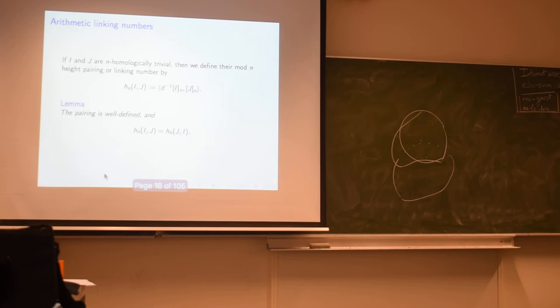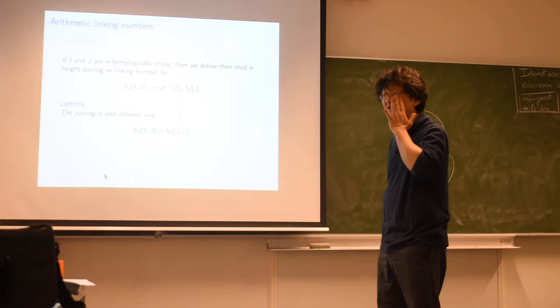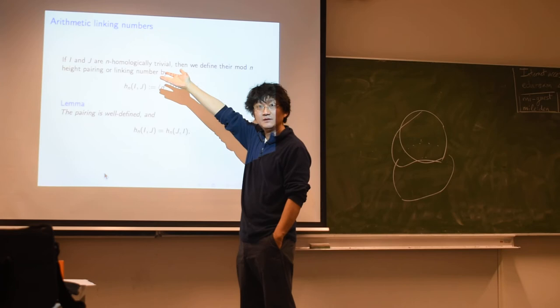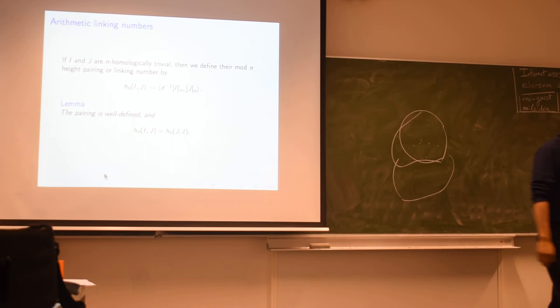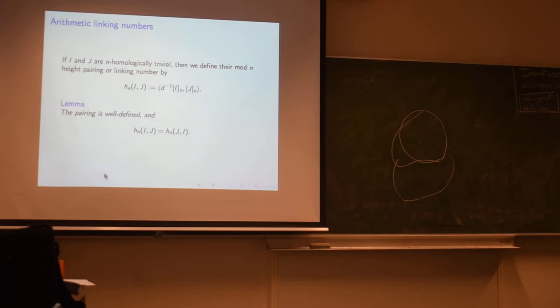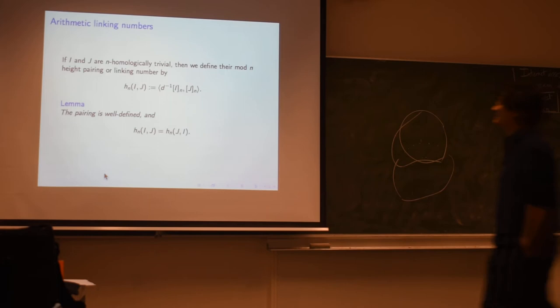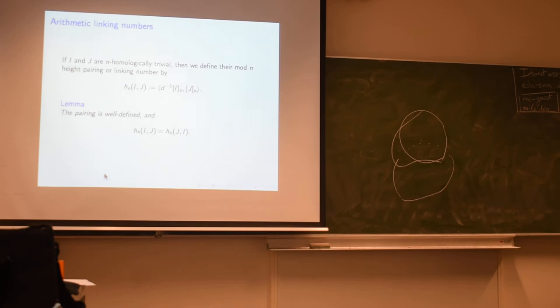If I and J are n-homologically trivial ideals, we can define their mod-n height pairing. I view this as a height pairing even though it's also natural to call it a linking number. You take D-inverse of one of them—that lands inside H1—and compare it with X2 by the duality pairing. So we'll define the height pairing or linking number in this way. It's straightforward to verify that this is well-defined—that it doesn't depend on which choice you take inside D-inverse—and that it is symmetric.